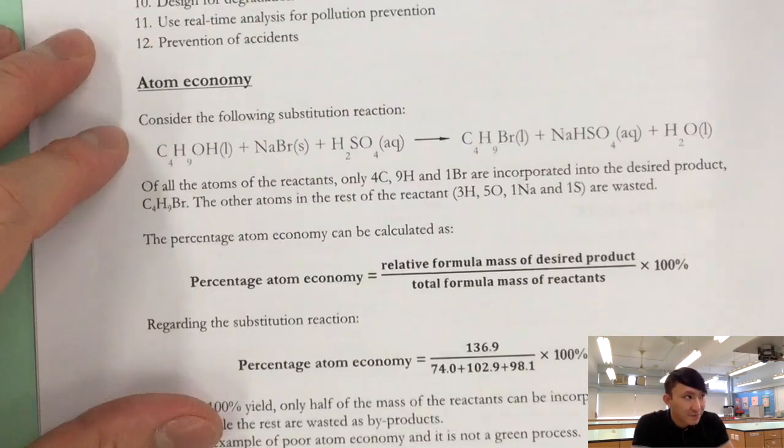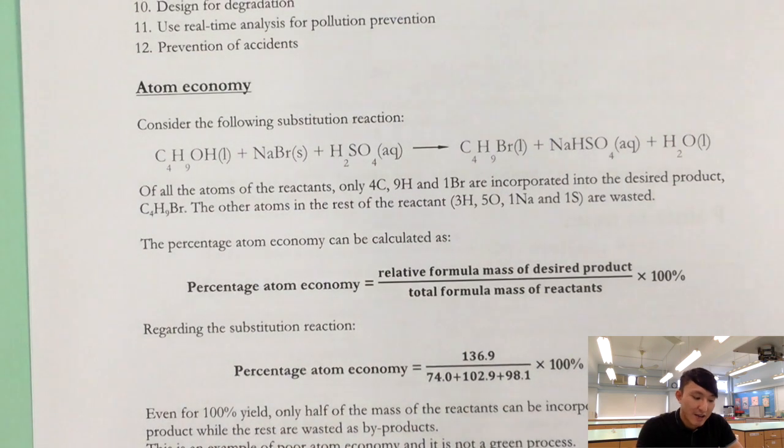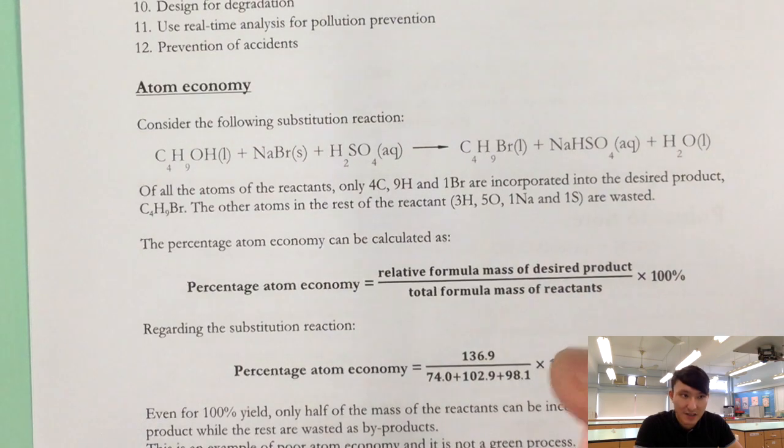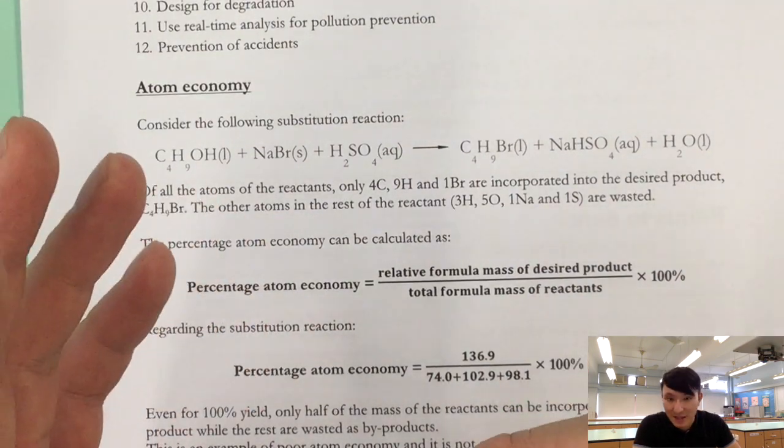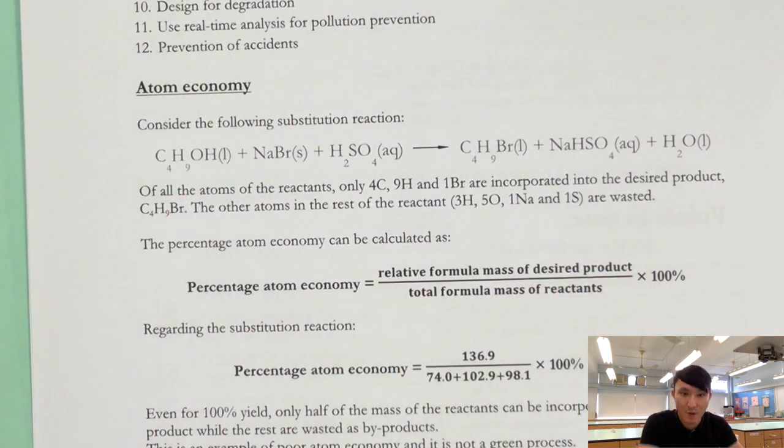Now, atom economy. Something new to you, but it's pretty easy actually. Now atom economy basically means how many atoms from the reactants can at the end end up in the product. Is it all the atoms from the reactants end up as the product, or do some atoms actually end up as byproducts and therefore wasted? This is what we are concerned about.